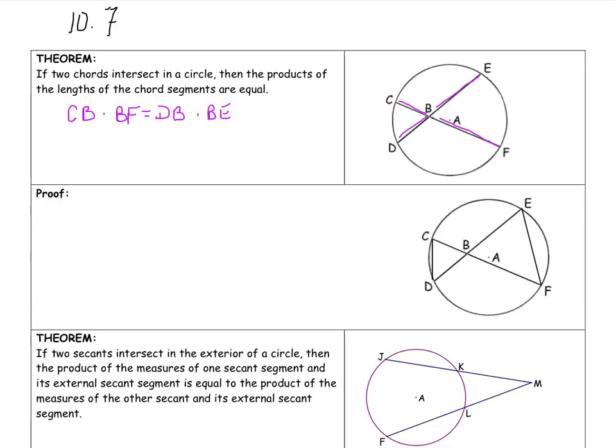I'd like to do a quick proof of this. So I've recopied the diagram down below, except I've marked a line between CD, actually a segment between CD, and between EF. So I've created two triangles here, triangle CBD and triangle EBF. I'm going to prove those two triangles are similar.